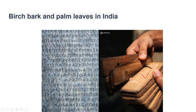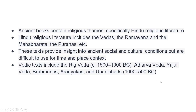Ancient books contain religious themes. The Ramayana and Mahabharata tell a lot about the society of those days — they are not just religious books but give a better understanding of society. Hindu religious literature includes the Vedas, Ramayana, Mahabharata, and Puranas, giving us insight into social and cultural conditions. There are four Vedas: Rig Veda, Atharva Veda, Yajur Veda, along with Brahmanas, Aranyakas, and Upanishads.